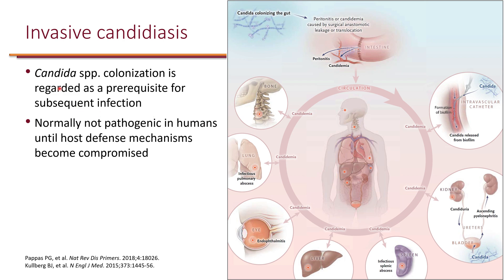Candida colonization is regarded as a prerequisite for subsequent infection, typically through the intestines. People can be colonized in the intestines with candida species as part of the flora. If somebody has peritonitis — for example, any type of colon surgery — this can cause leakage and these candida can find their way into the bloodstream and cause candidemia. Another path could be if somebody has a catheter long-term; through the catheter, candida species colonized on the skin can find their way into the blood.